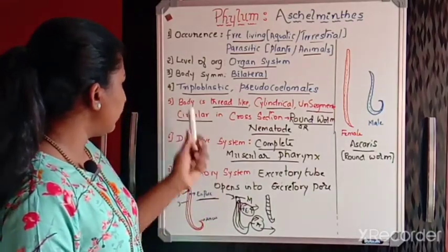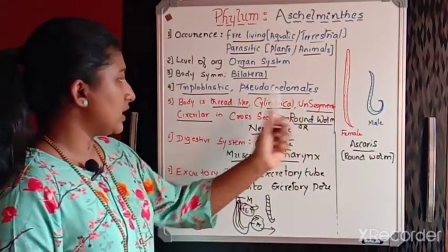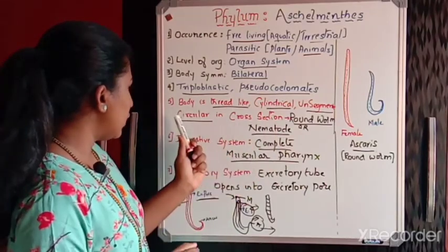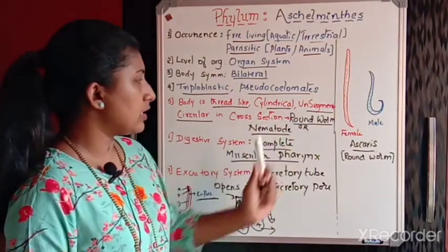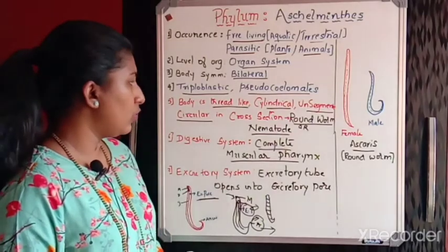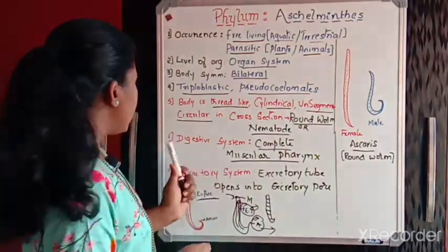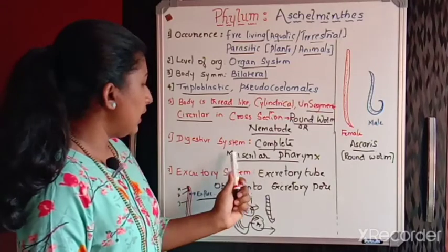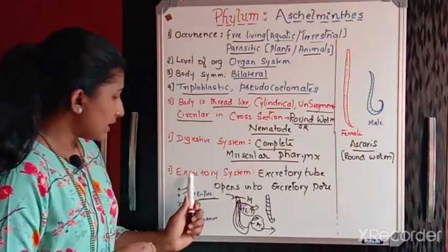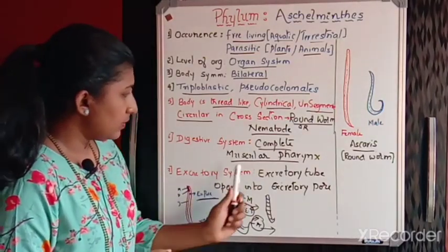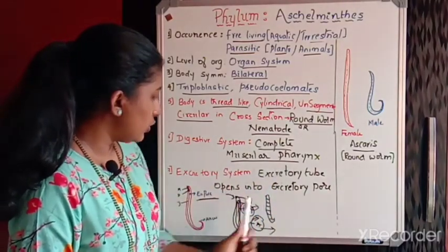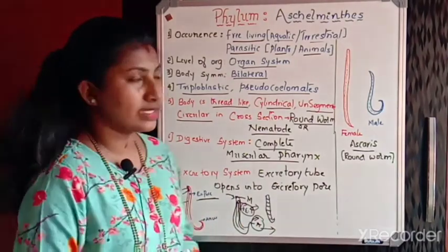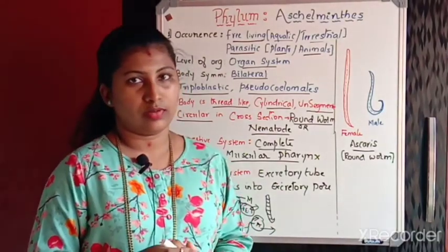To repeat the special features: the body is thread-like, cylindrical, and unsegmented. If you take the cross section it is circular in nature, hence it is called roundworms or nematodes. The digestive system is complete and they have a muscular pharynx. The excretory system consists of excretory tubes that join together to form an excretory pore.